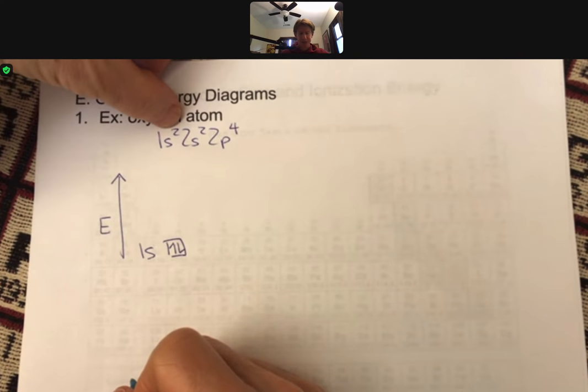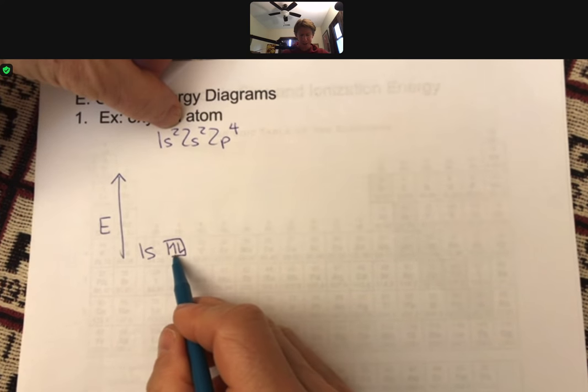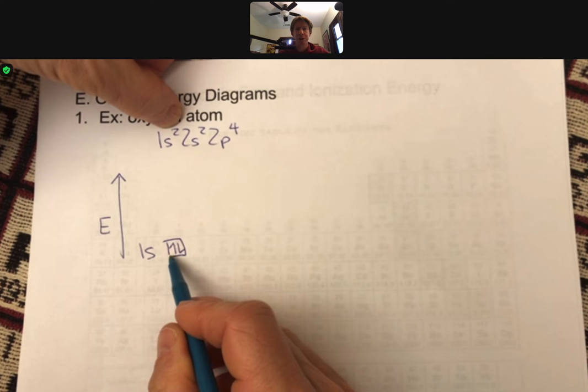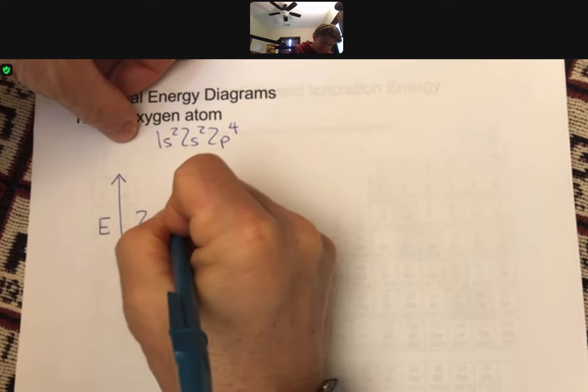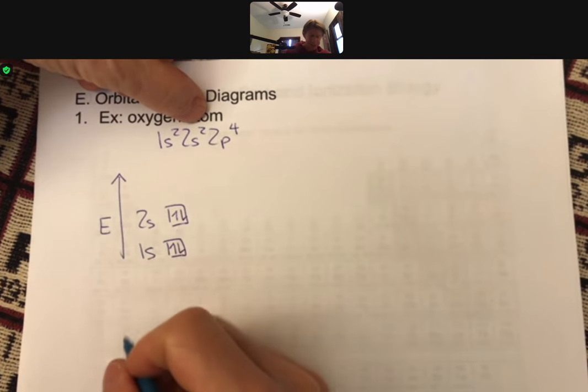And 1s has two electrons, therefore it has one up and one down, that's two arrows. Then 2s has two electrons, then 2p.